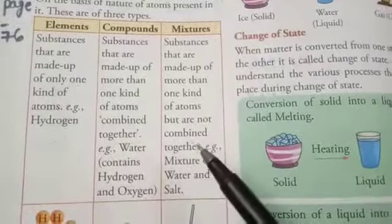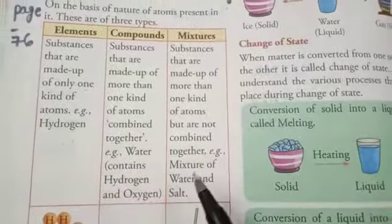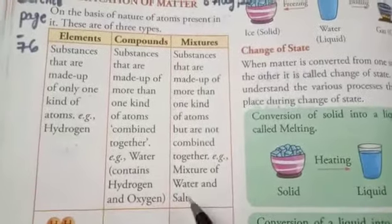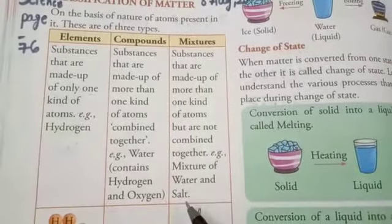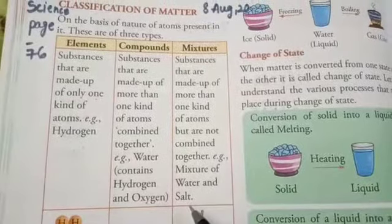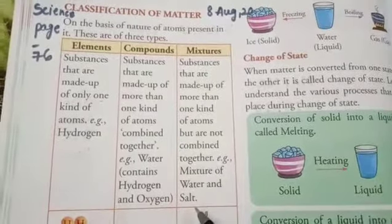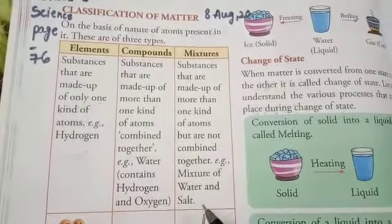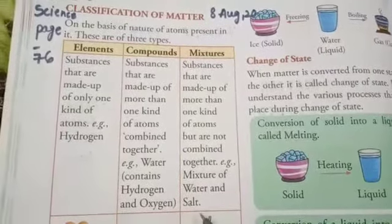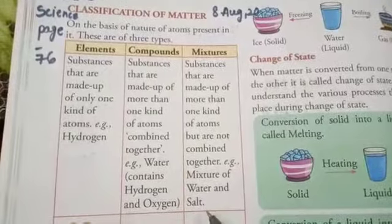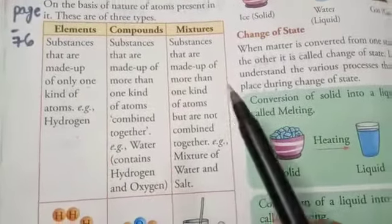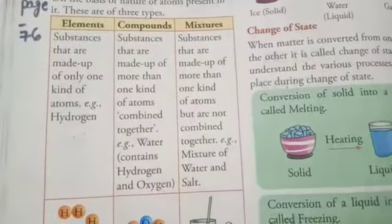What is the example of mixtures? Water and salt. When we mix salt in water, they are mixed with each other but they are not combined with each other. So we call mixtures like this.